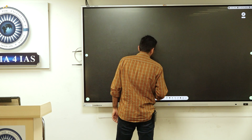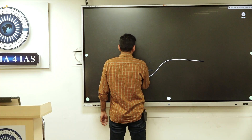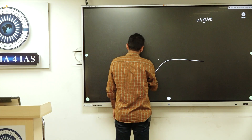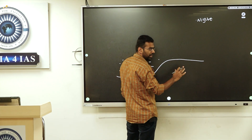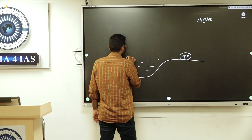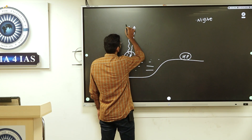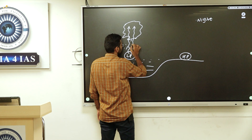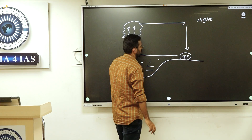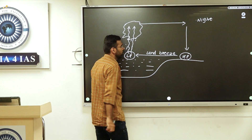Similarly, during night time you have low pressure over the ocean and high pressure over land. This wind descends here and the convectional cell reverses. This is called land breeze — during night time you will have land breeze in the coastal region.